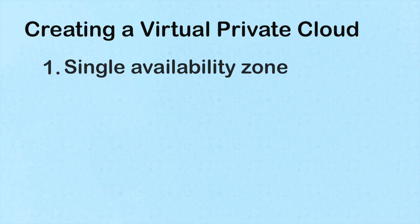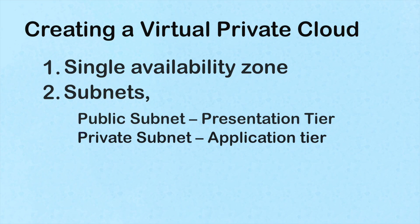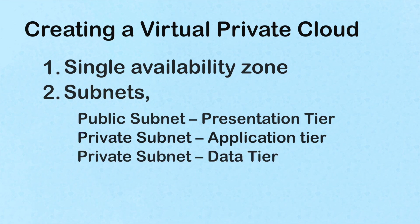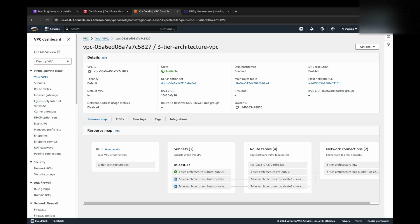Next, we'll set up our VPC. We'll keep things simple for this setup by using a single availability zone. Within our VPC, we'll create three subnets: a public subnet for our presentation tier where the React application will reside, a private subnet for the application tier to host our Node.js application, and another private subnet for our data tier to house the MySQL database. To ensure our private subnet EC2 instances can access the internet, we'll add a NAT gateway. And of course, we'll need an internet gateway for overall internet connectivity to our VPC.